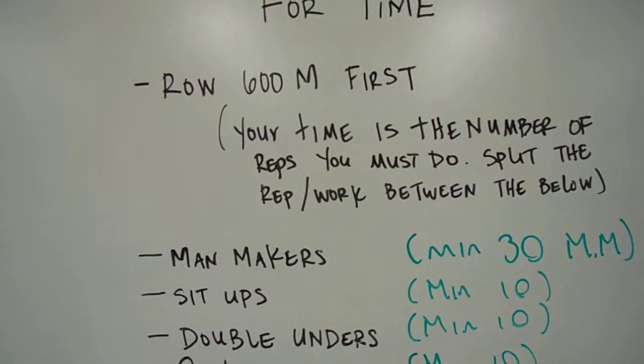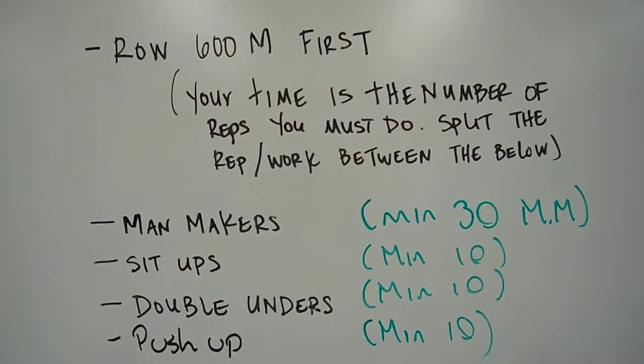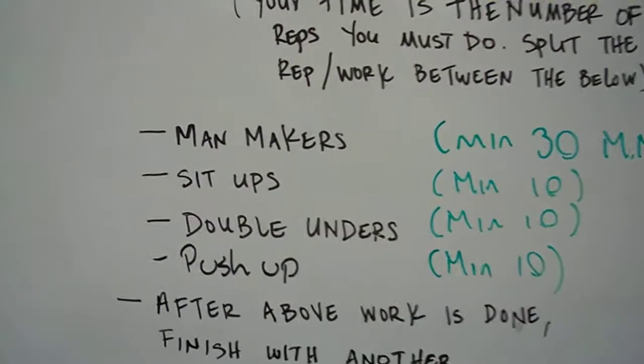You're going to row 600 meters first, and the time you get, you're going to convert that into seconds. You've got to split those seconds into these four exercises.